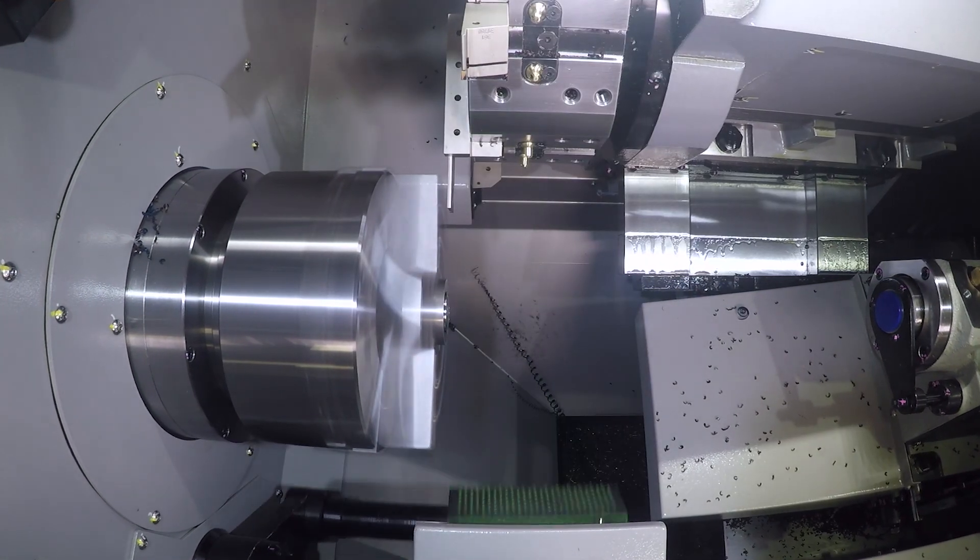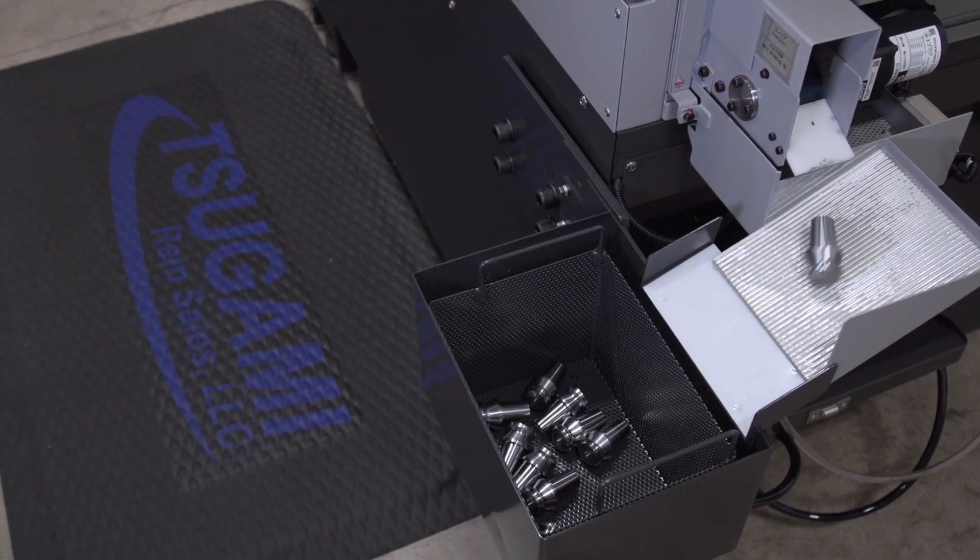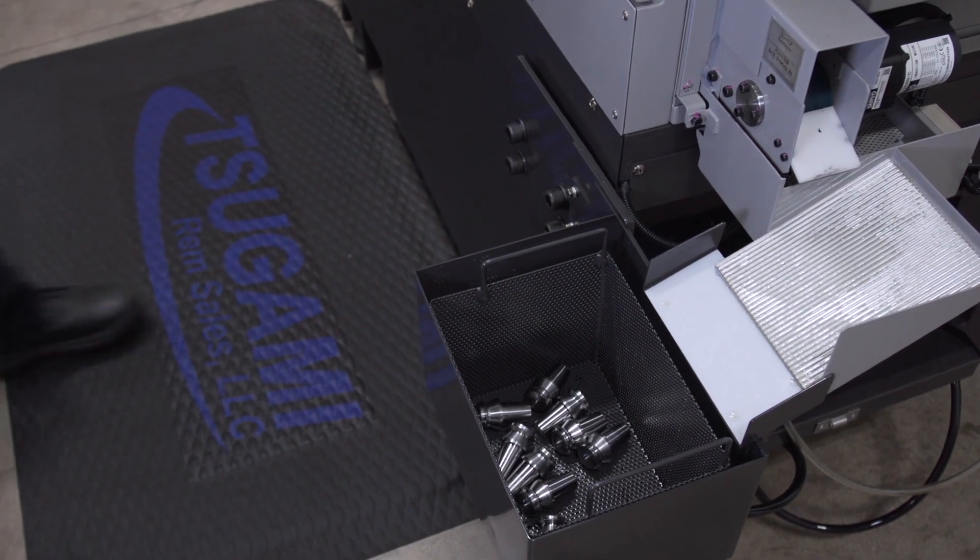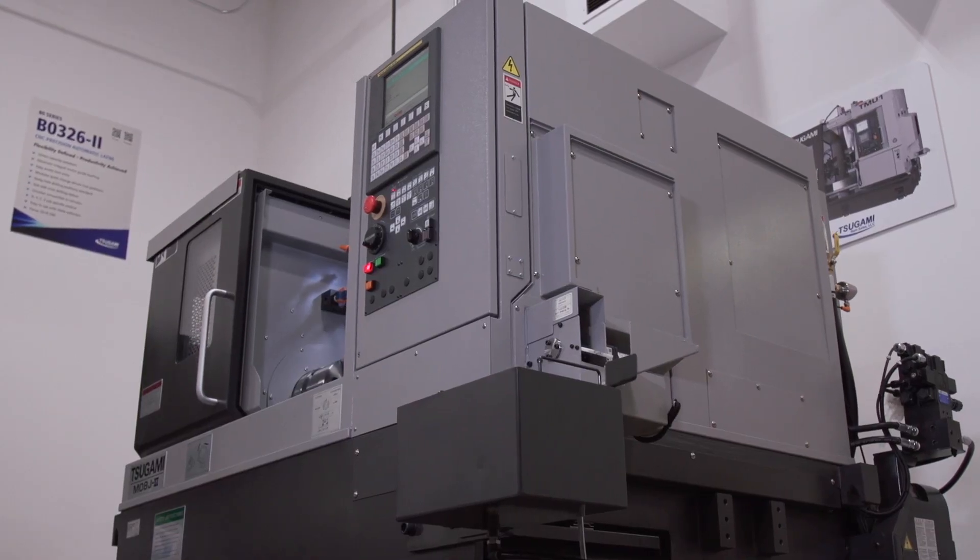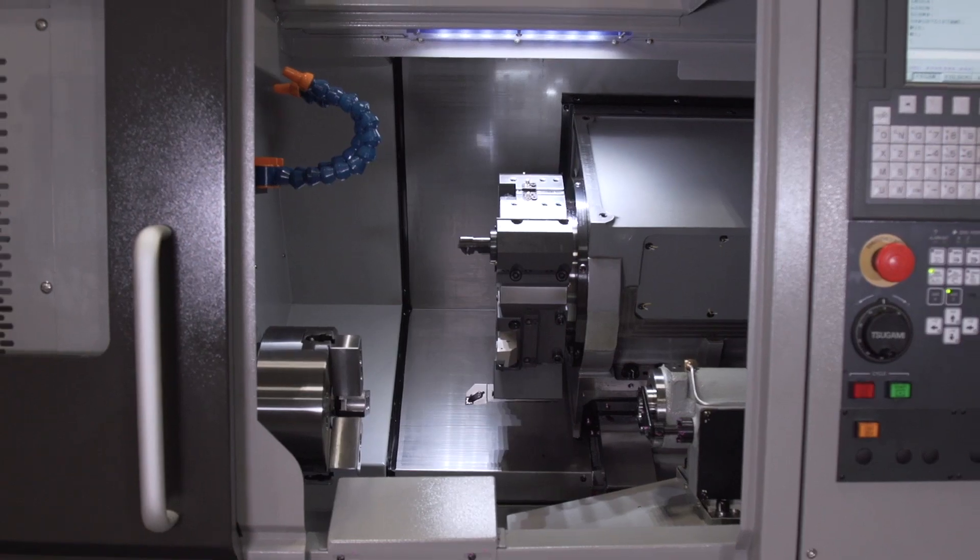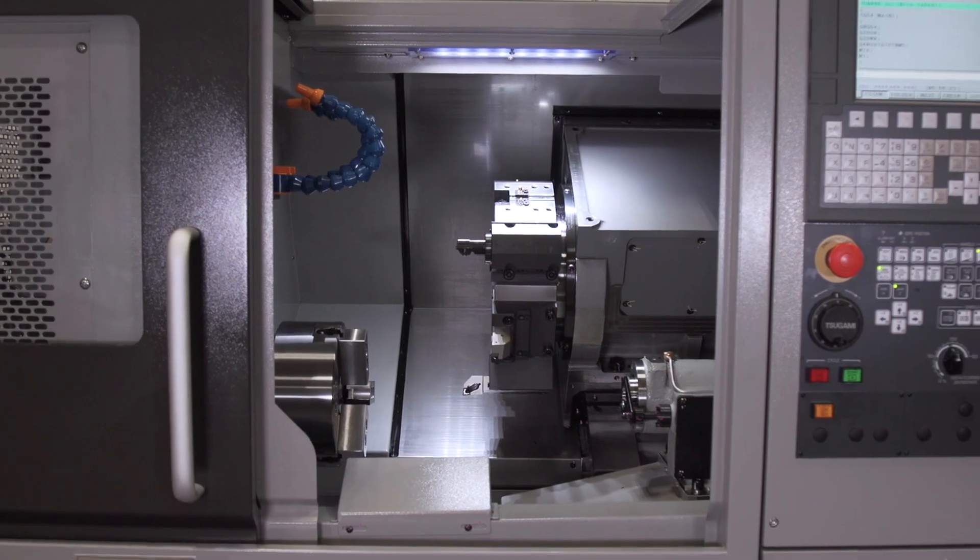The M08J may be small, but it's built heavy. From the box weighs on the X-axis to the heavily ribbed base casting, this machine weighs in at 7,275 pounds but only takes up 31 square feet of floor space.